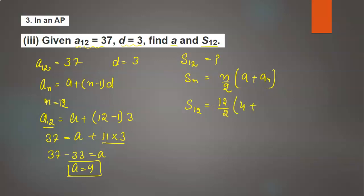This equals 6 times (4 + 37) = 6 times 41 = 246. So the sum of 12 terms is 246.